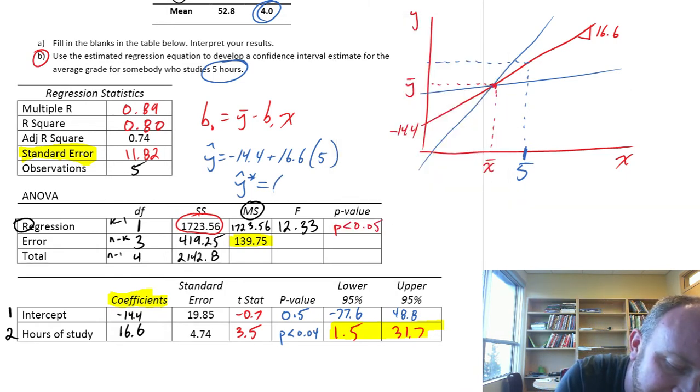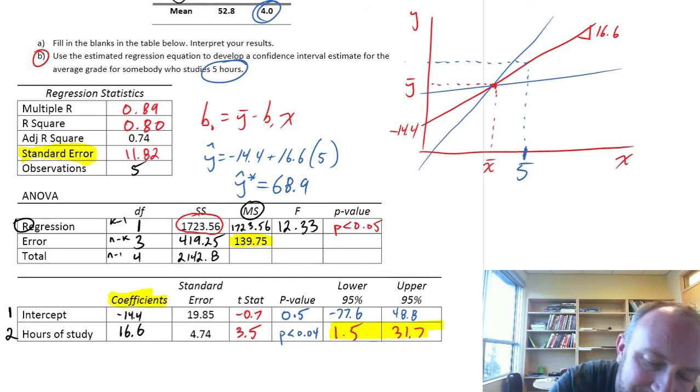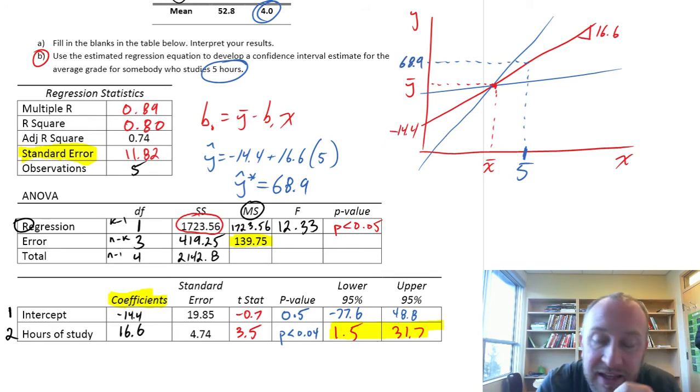So this means that, on average, somebody who studies for five hours a week gets a grade of 68.9. So that's our point estimate, 68.9. Now we want to calculate a confidence interval around that point estimate.